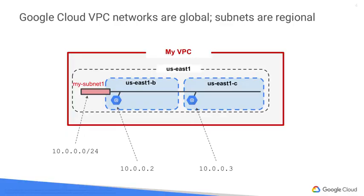Here's something that surprises a lot of people who are new to GCP: the virtual private cloud networks that you define have global scope. They can have subnets in any GCP region worldwide, and subnets can span the zones that make up a region. This architecture makes it easy for you to define your own network layout with global scope.